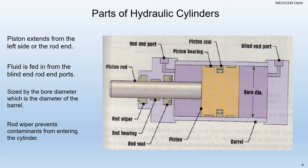We have a rod wiper that keeps particles from getting in or out on that piston rod — it keeps it clean so when we retract, anything floating in the air where we were working doesn't get on the rod. All different parts are important. We have the piston seal, which is very important so that we don't leak fluid from either the blind end to the rod end chambers, so the piston can continuously hold the pressure.